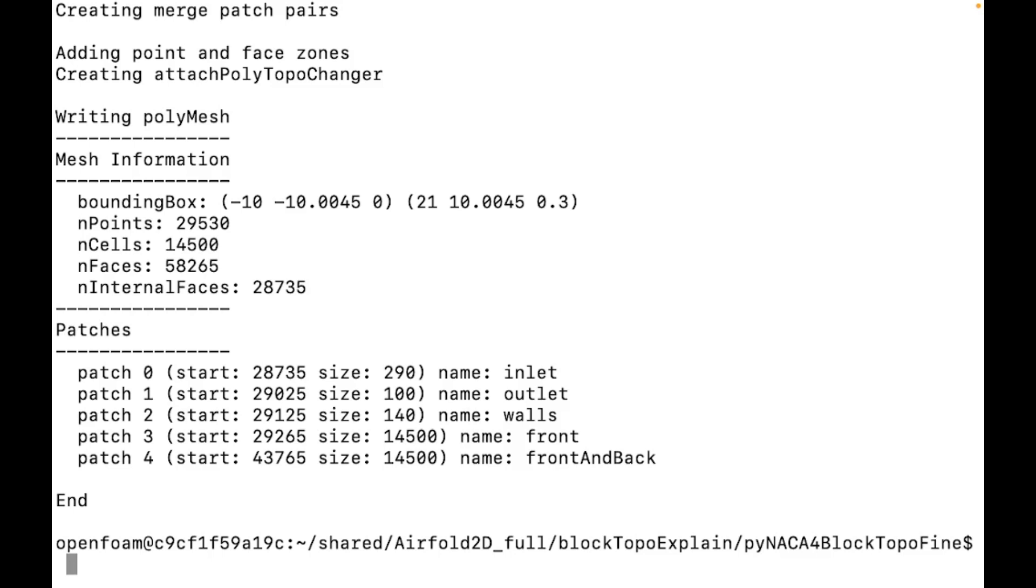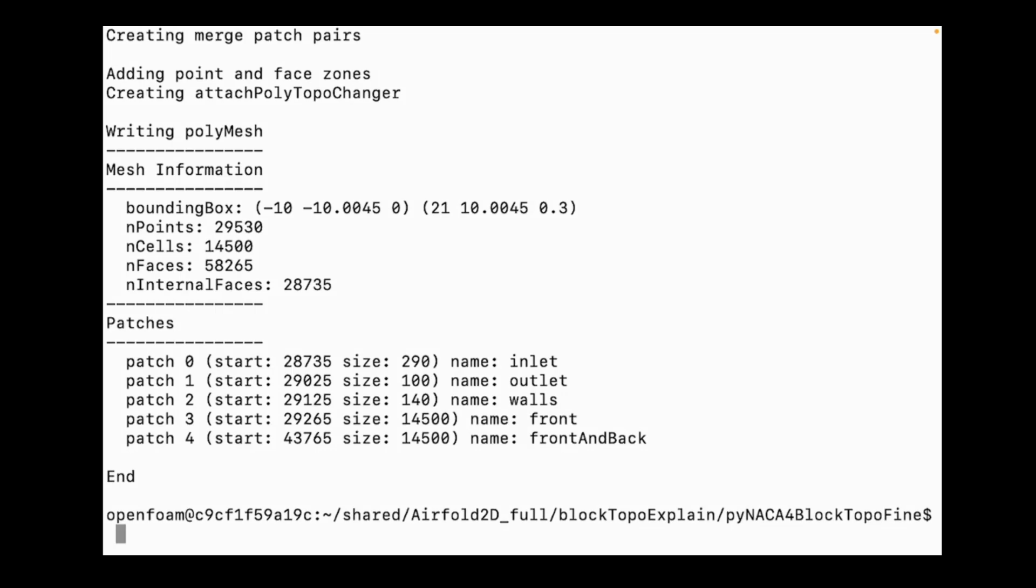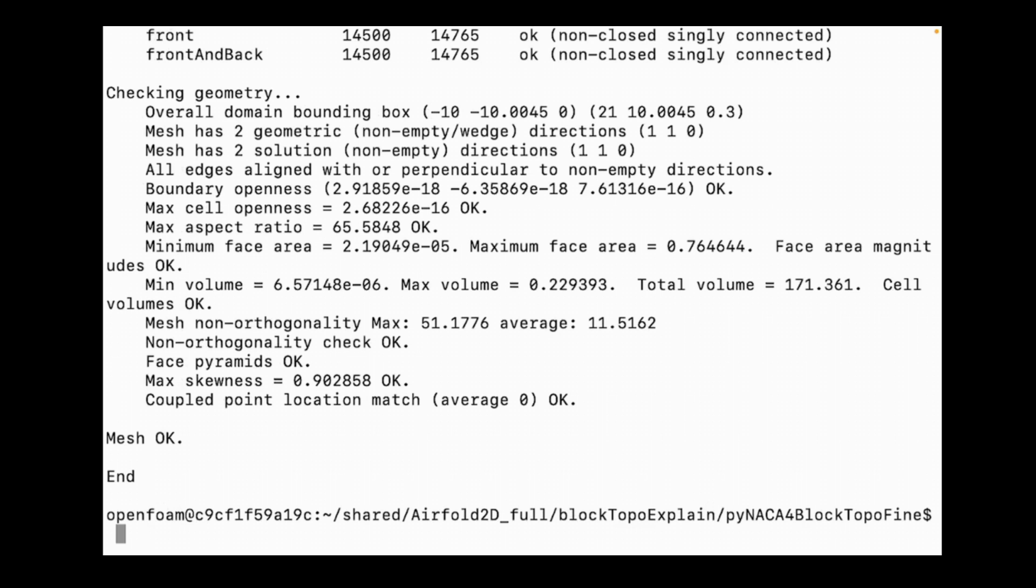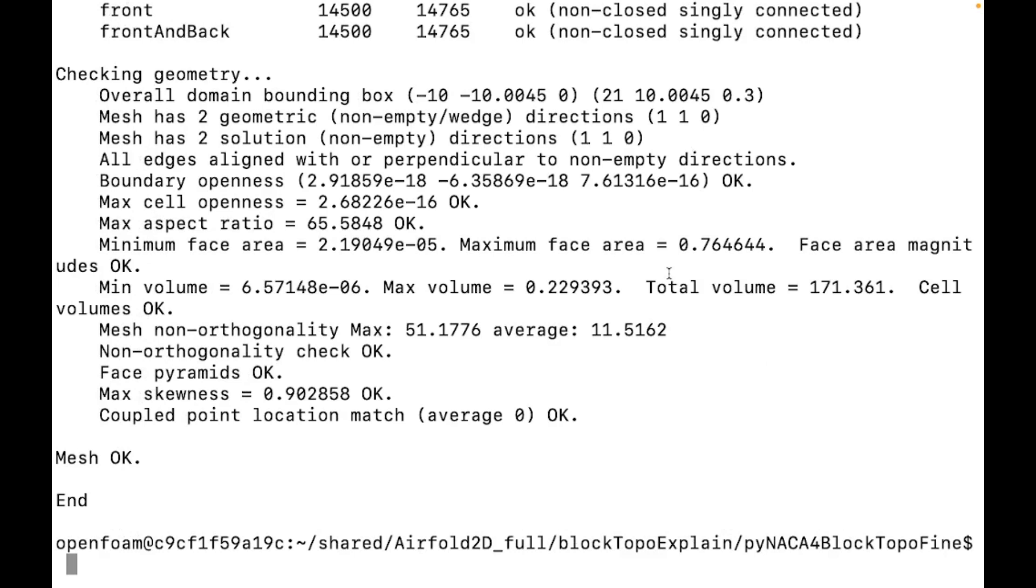Once the meshing process is finished, it's always a good practice to check the mesh quality and you can do this by typing checkMesh. This command analyzes the generated mesh and provides a detailed report on its quality. As you can see here, Mesh OK, this means your mesh passes all the essential quality checks.